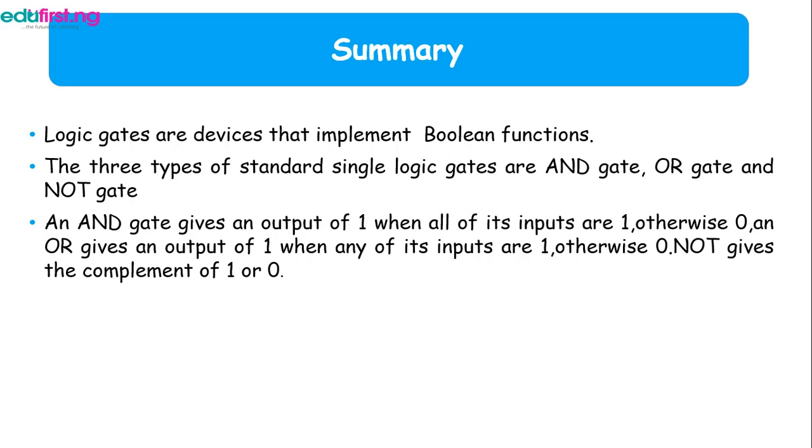And the OR gate gives an output of 1 when any of the inputs are 1. Take note, for the AND gate, all the inputs have to be 1 or ON, while for the OR gate, you just need to have any of them to be 1 or ON.